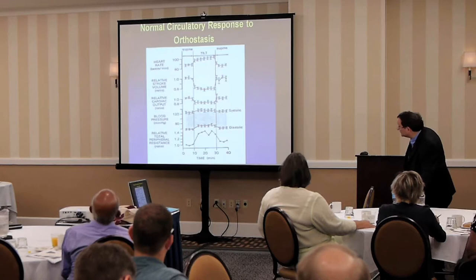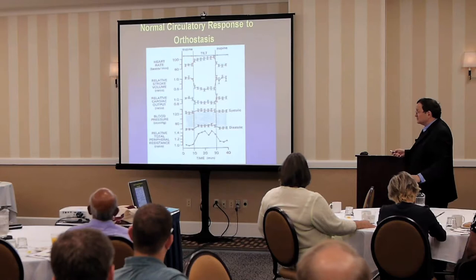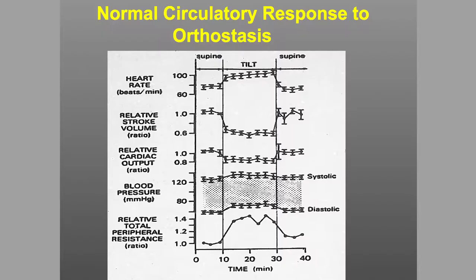Looking at a normal circulatory response: normally the heart rate goes up substantially — about 20 to 25 bpm, and for an adult it's taken to be 30 when standing quietly or tilted. Stroke volume goes down considerably, about 40%, but because of the increased heart rate, the amount the heart pumps only drops by about 20%. Blood pressure typically goes up slightly, more diastolic than systolic, so the pulse pressure drops — and many people use that as an index of stroke volume.